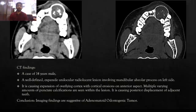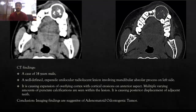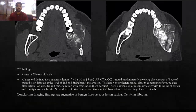The third case: approximately 14 years of age, presenting with pain and swelling. CT findings show a well-defined expansile multilocular radiolucent lesion involving the mandibular process on the left side, causing expansion of the cortex and erosion on the left side with multiple compartments visible within the region. Conclusion based on CT findings: odontogenic lesion.